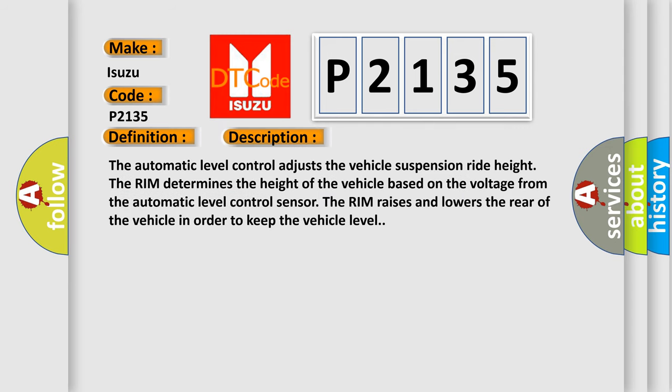The automatic level control adjusts the vehicle suspension ride height. The RIM determines the height of the vehicle based on the voltage from the automatic level control sensor. The RIM raises and lowers the rear of the vehicle in order to keep the vehicle level.